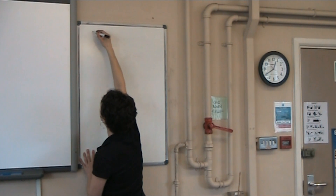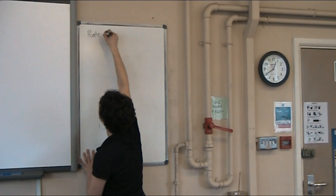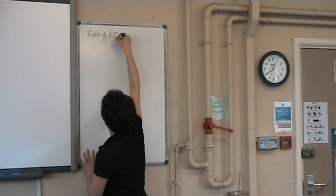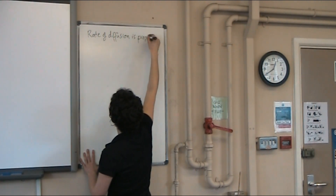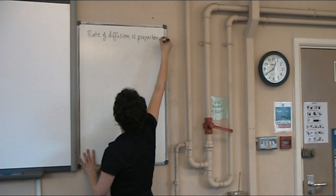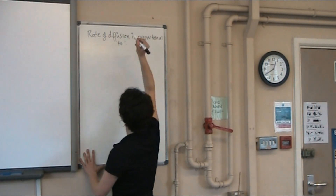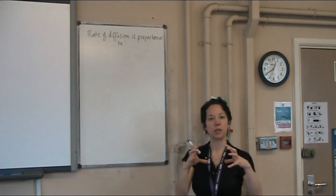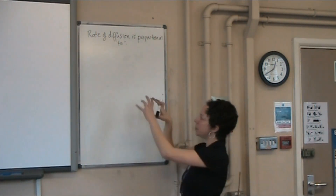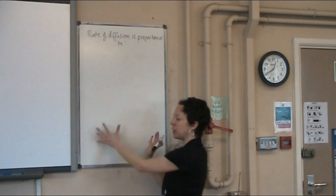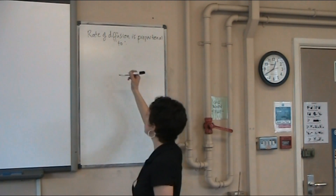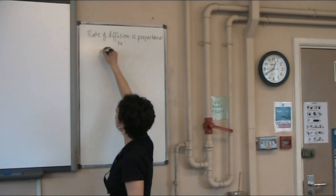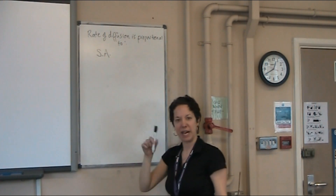He said that the rate of diffusion is proportional to — and there's a really neat little equation that you can remember. I'll write the equation down but also draw a little picture to help you remember. So he said it's surface area, and I'll just abbreviate that to SA,